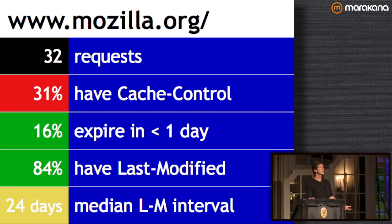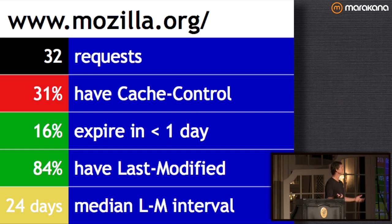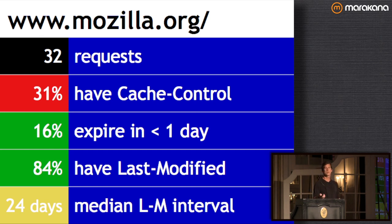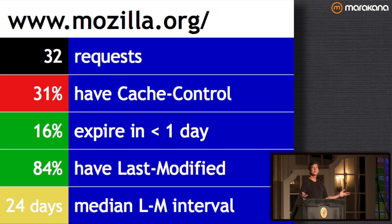Mozilla generally really good, but this is a small page — only 32 requests — and only 31% have a Cache-Control header. The median last-modified interval is 24 days; 10% of that is only 2.4 days, which isn't a great heuristic window. If resources are changing every 24 days on median, you could specify a max-age of a week or two and get much better caching.